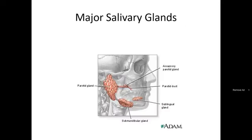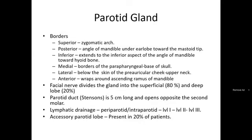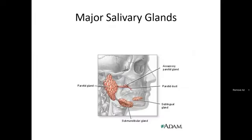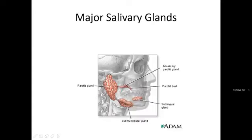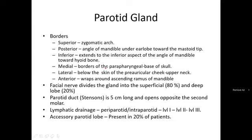The parotid gland has six borders: superior, posterior, medial, lateral, anterior, and inferior. The superior border is the zygomatic arch — you can see this in the skull. The inferior border extends to the inferior aspect of the angle of the mandible toward the hyoid bone. The posterior border runs from the angle of the mandible to the earlobe toward the mastoid tip.